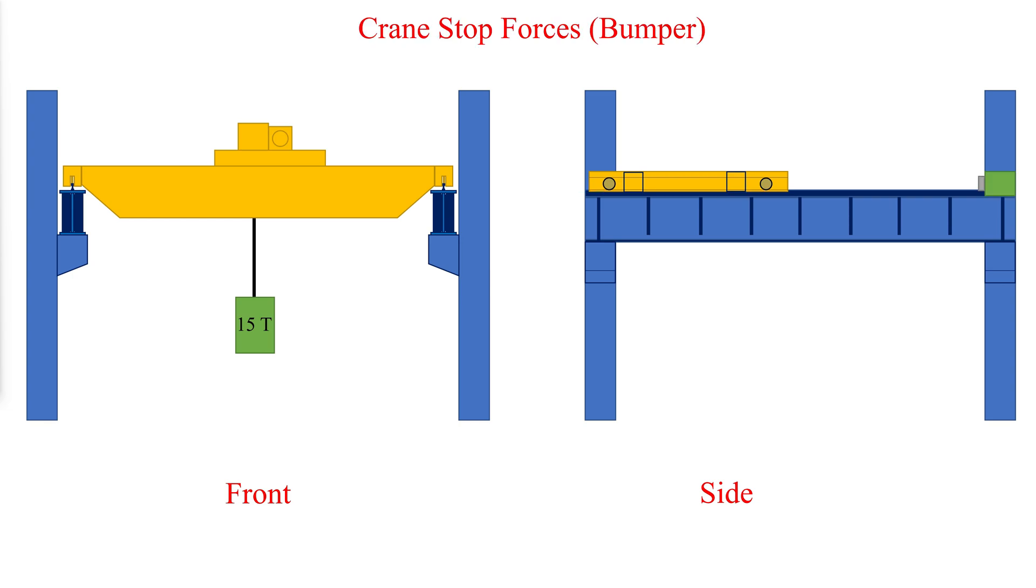The magnitude of the bumper force is dependent on the energy-absorbing device used in the crane bumper. The device may be linear such as a coil spring or non-linear such as hydraulic bumpers. The crane stop, crane bracing, and all members and their connections that transfer the bumper force to the ground should be designed for the bumper force.